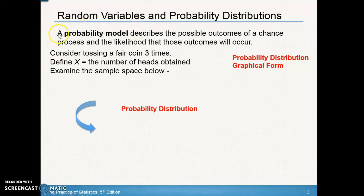In this section, we're going to calculate and interpret a mean or expected value of a discrete random variable, see how that's different from our previous expected values, calculate and interpret the standard deviation of discrete random variables, and compute the probability using the probability distribution of continuous random variables. So the first thing we're going to talk about is a probability model. A probability model describes the possible outcomes of a chance process and the likelihood that these outcomes will occur.